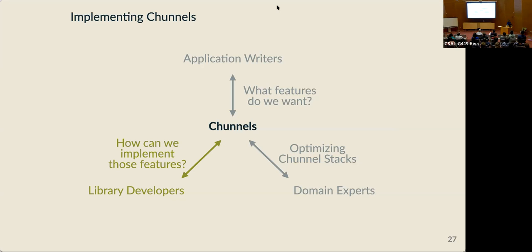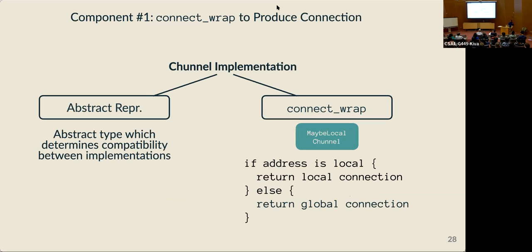That's how an application developer can use channels to express the features they want. Next we'll look at how channel libraries are implemented. Channel implementations have two components, and we'll look at how they work for the maybe-local or fast path channel. The first component is the connection transformer functionality — a function that takes the input connection and returns a new connection implementing the channel. In our case, the function checks whether the peer address is local or not; if local, it creates a local connection and returns it, otherwise it uses the input connection as the globally scoped remote connection.